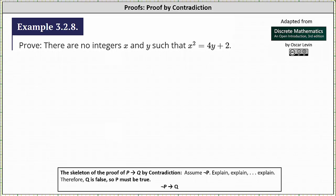Welcome to an example of proof by contradiction. We want to prove there are no integers x and y such that x squared is equal to 4y plus 2.